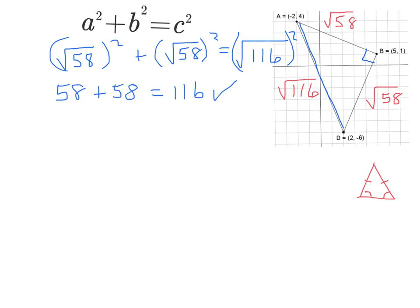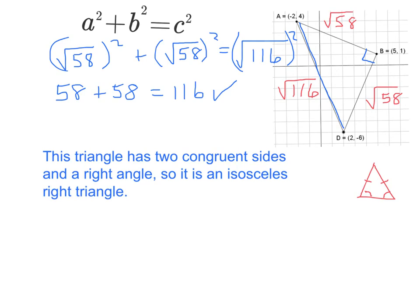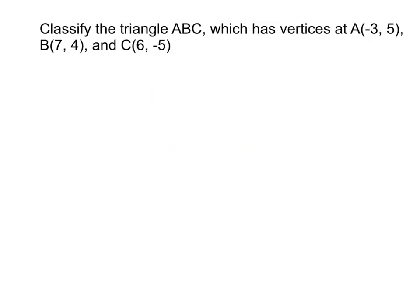Now all that's left is to finish your proof by making your conclusion. You would actually state in words that this was an isosceles right triangle, because it has two congruent sides and a right angle. I hope this screencast was helpful and here is a problem for you to try on your own and bring to class.